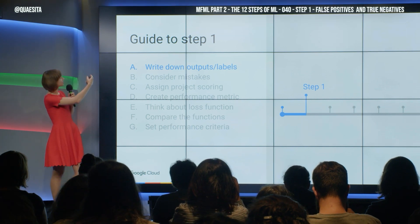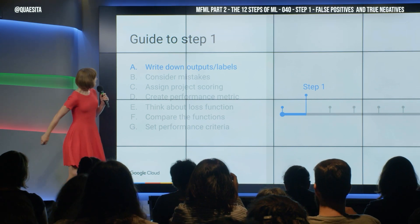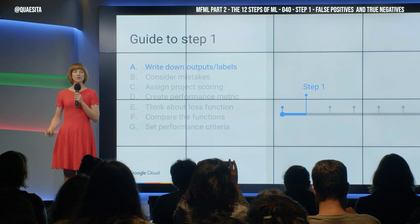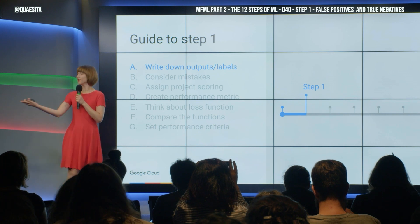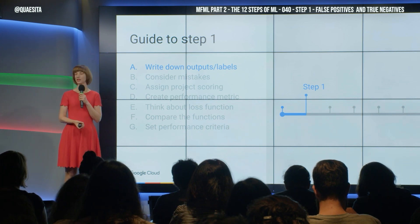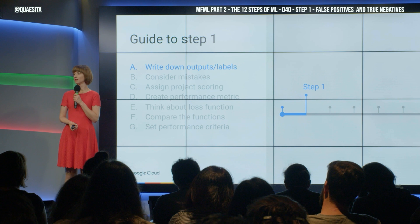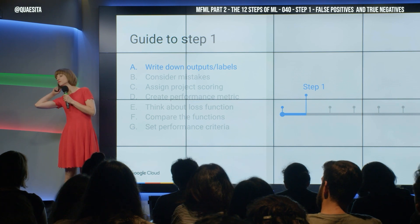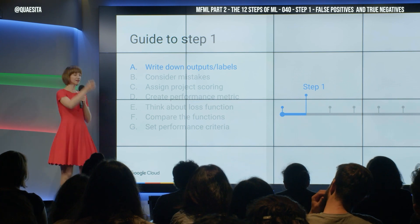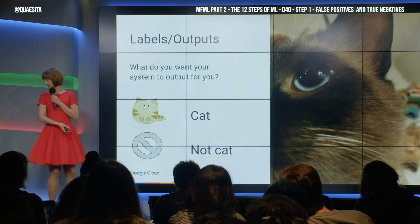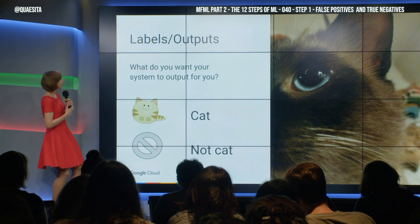So what's thing one? Write down the outputs or labels for our cat classifier. May I have some suggestions from the audience? What should it output? Cat, not cat. Very nice. Couldn't have said it better myself.